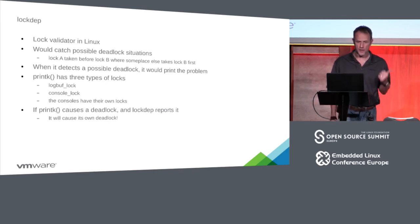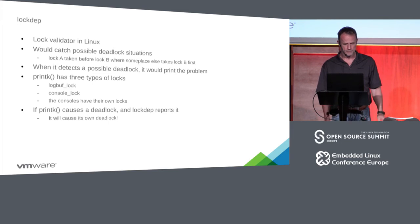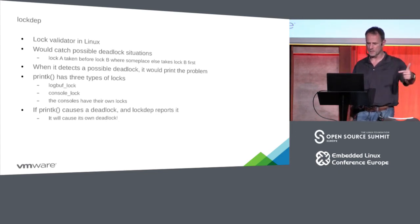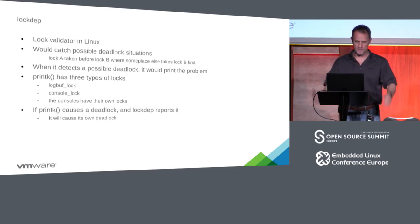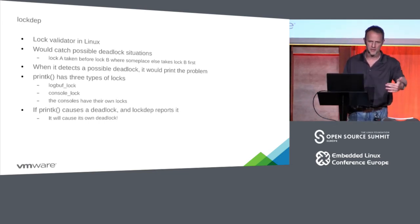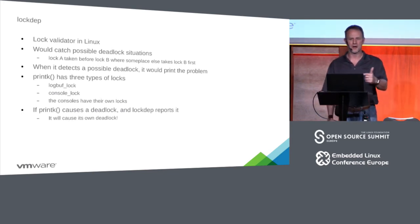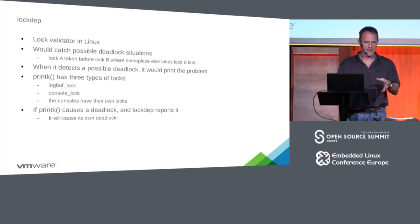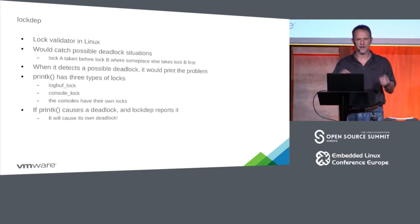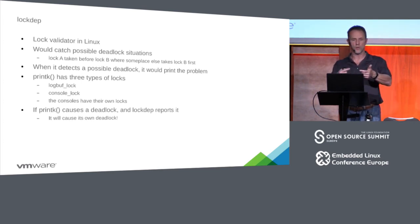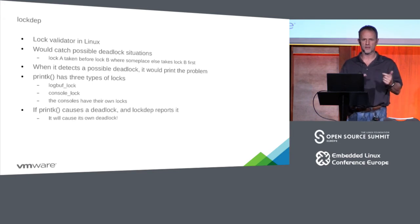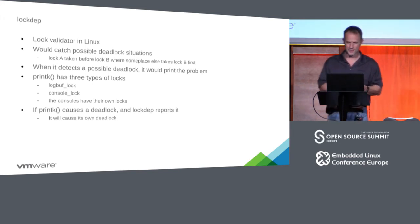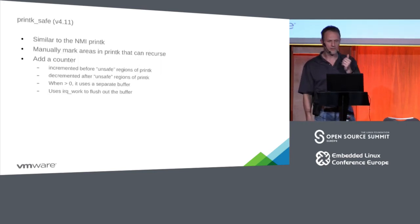So printk has three different locks: log_buf_lock, console_lock, and console_owner_lock. If printk causes a deadlock because the console lock does something, lockdep will also print out a report — and it uses printk. So lockdep itself can now cause a deadlock, which really would suck: your system would lock up, you'd enable lockdep to figure out why, and then printk itself causes the deadlock, preventing you from ever finding the original problem. In 4.11, a new functionality called printk_safe was created, similar to NMI printk, requiring manually marking areas within the printk code that can possibly recurse and deadlock.